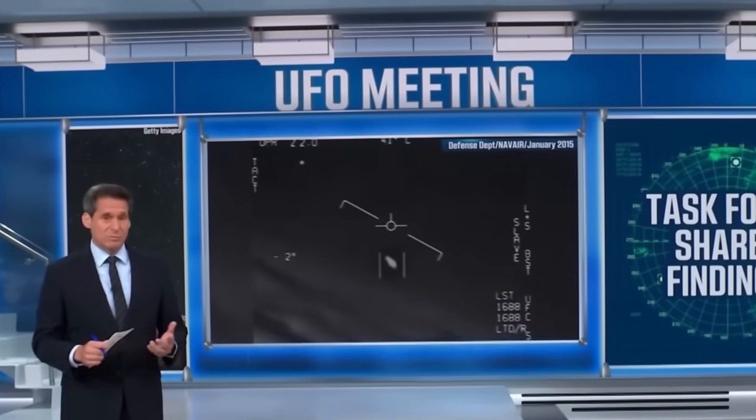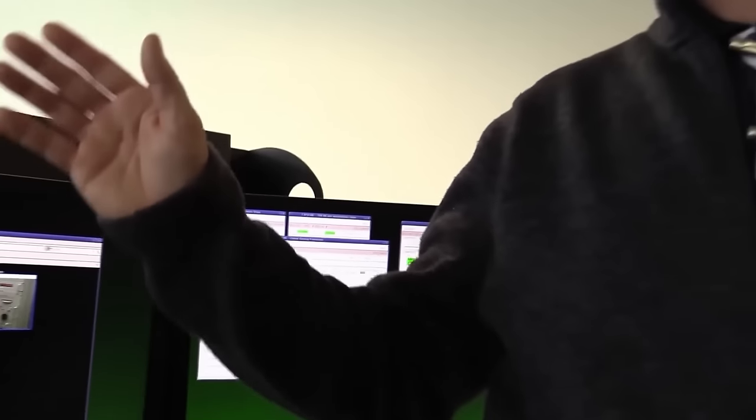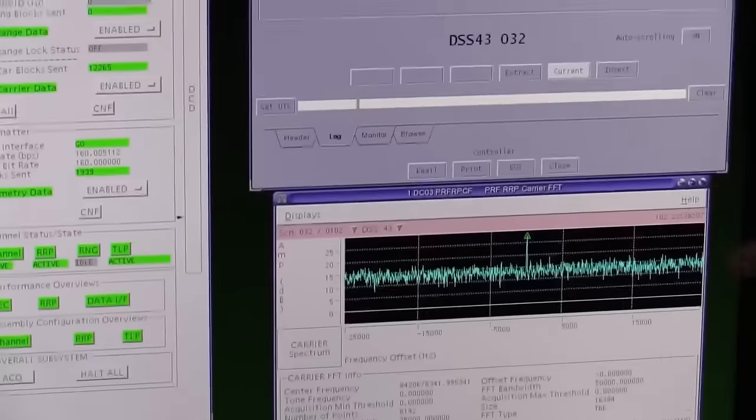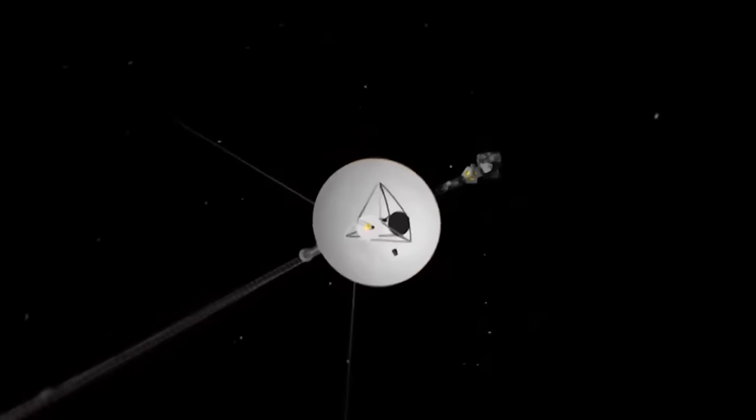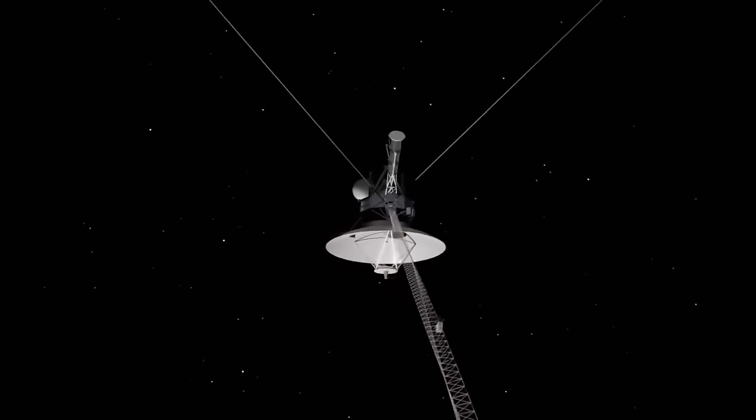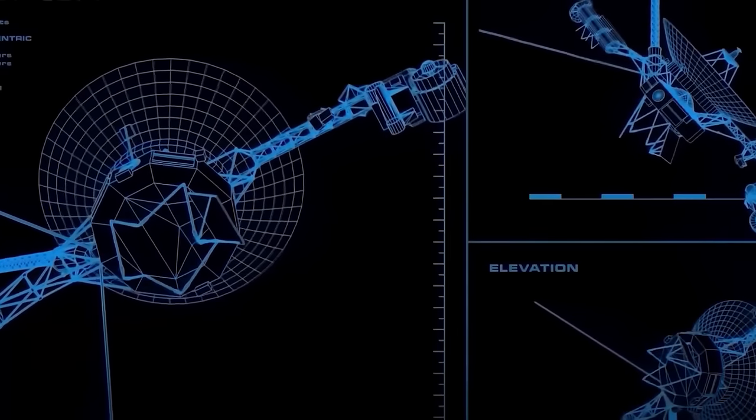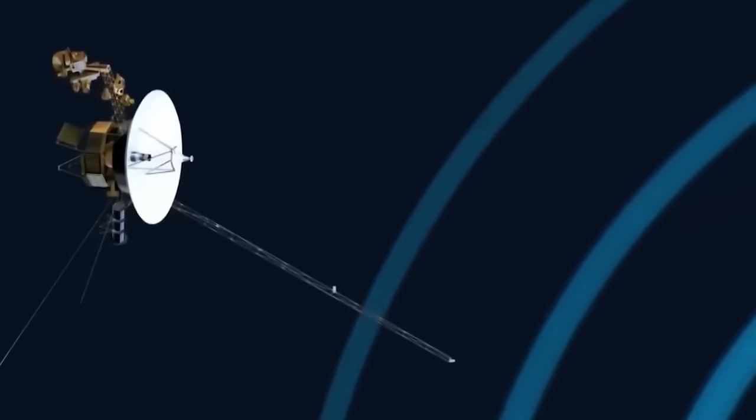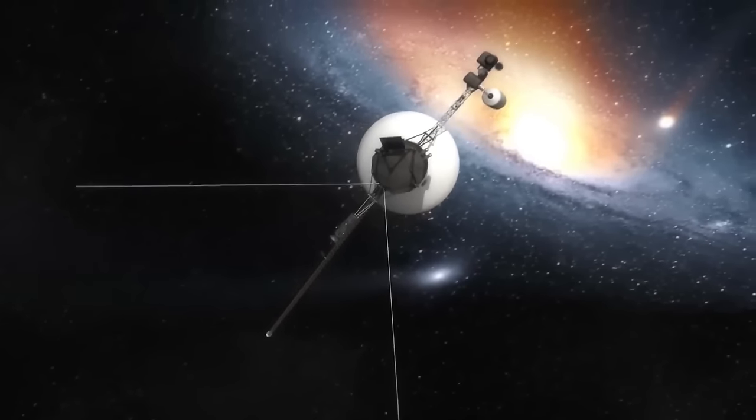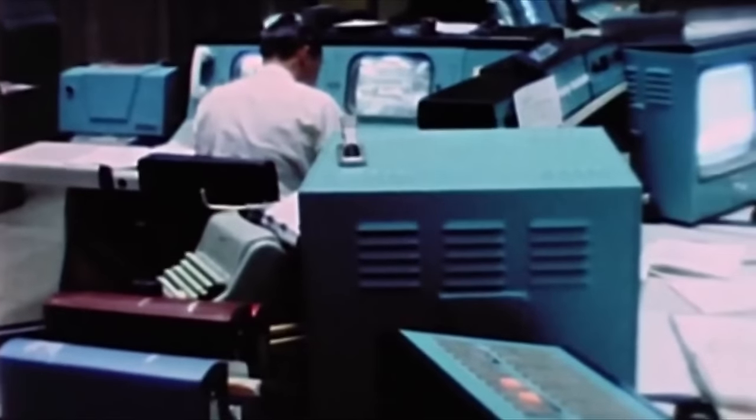When news of the discovery first broke, some scientists pondered the possibility that it might be a mistake. They speculated that perhaps Voyager 1, after nearly five decades of service, was showing signs of its age. Could it be that its systems were faltering, leading to wrong data transmissions? Considering Voyager 1's long and dedicated service since its launch in 1977, such a scenario seemed plausible. Over almost half a century, one could imagine the spacecraft's onboard computers growing weary, struggling to carry out their tasks efficiently.